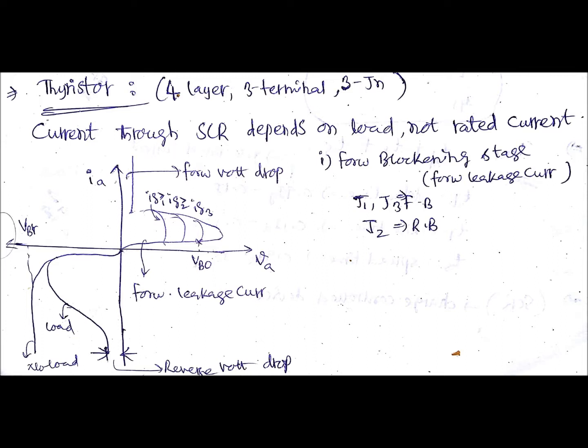Here you can see the characteristics of thyristor or SCR. There I have written forward leakage current, that is during forward blockening stage. Then when you apply gate signal, it is going to get turned on.